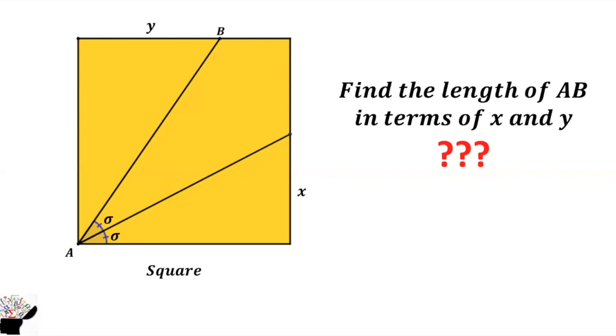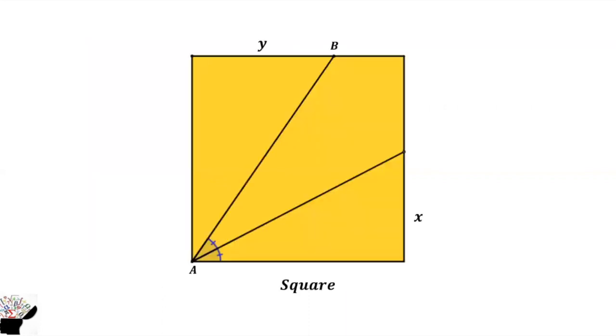Let us go through the solution. In this case, we can represent this angle as theta and this one as 2 theta. From there, since this angle is 90 degrees, this side is 90 minus 2 theta.